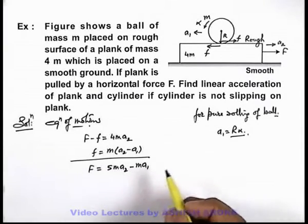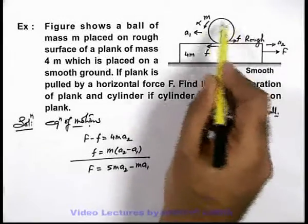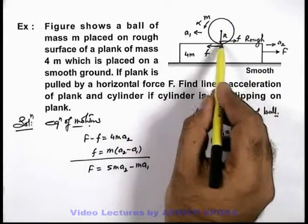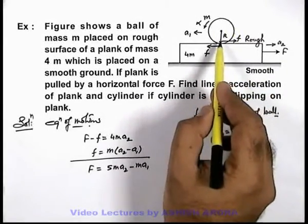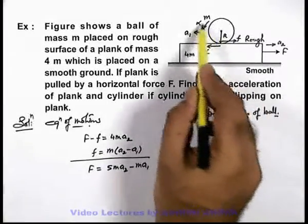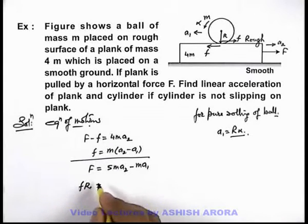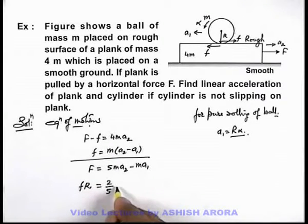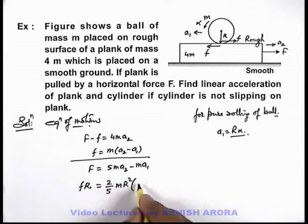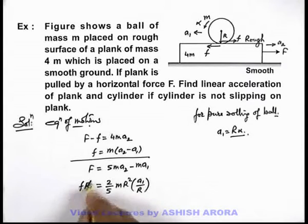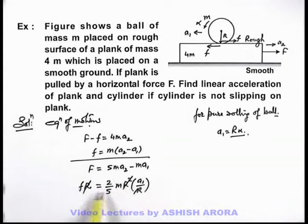And if we write the equation of rotational motion for this ball, the only force acting on it is friction, and torque of which is providing the angular acceleration. So we can write fr equals I alpha, which can be written as 2/5 mr² and alpha we can write a₁/r. Here r gets cancelled out and we get the value of friction to be 2/5 ma₁.